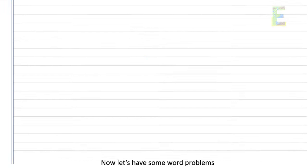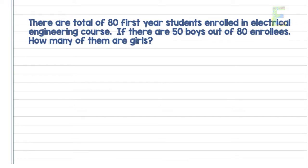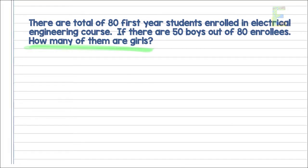Now let's have some word problems. There are a total of 80 first-year students enrolled in electrical engineering. If there are 50 boys out of 80 enrollees, how many of them are girls? I will give you 30 seconds to solve this problem, or you can pause the video if you need more time.